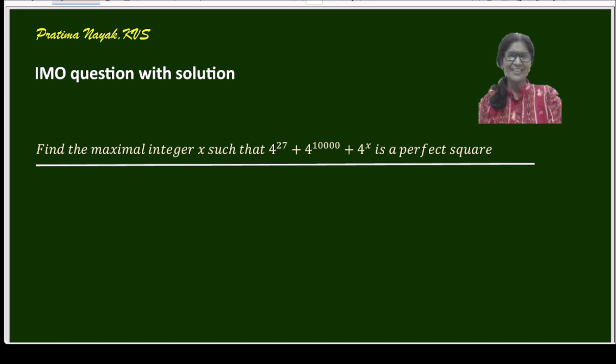Today I have taken a question from International Math Olympiad which is based on number theory. The question is: find the maximal integer x such that 4^27 + 4^10000 + 4^x is a perfect square.